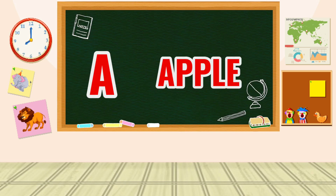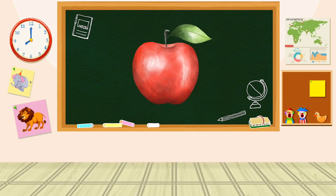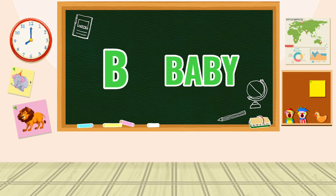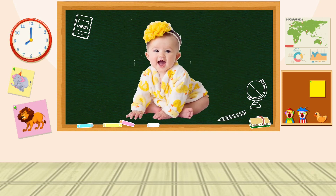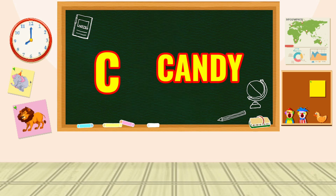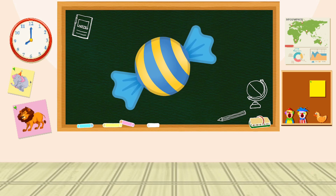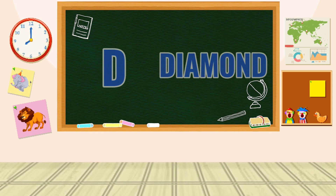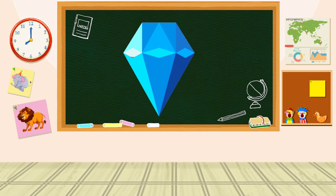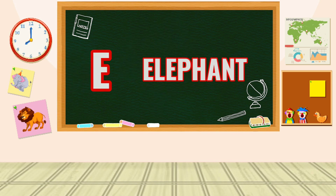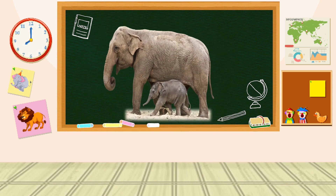A is for Apple. A-A-Apple, A-Apple. B is for Baby. B-B-Baby, B-Baby. C is for Candy. C-C-Candy, C-Candy. D is for Diamond. D-D-Diamond, D-Diamond. E is for Elephant. E-E-Elephant, E-Elephant.